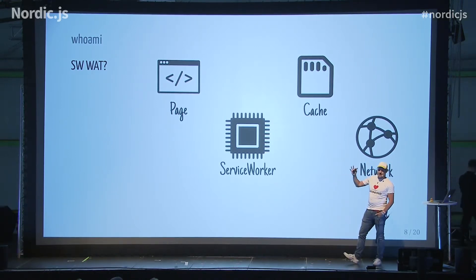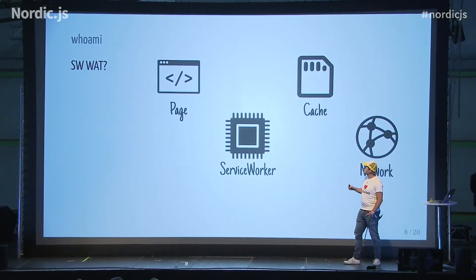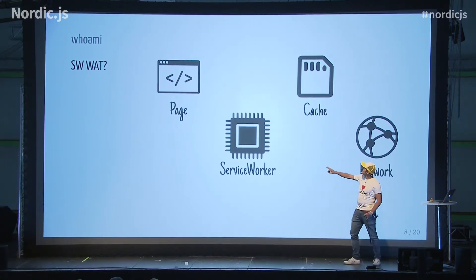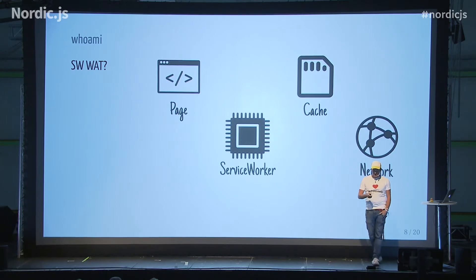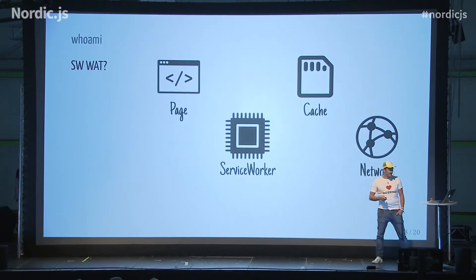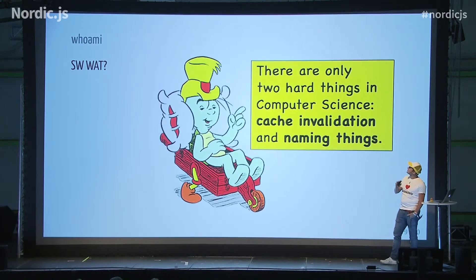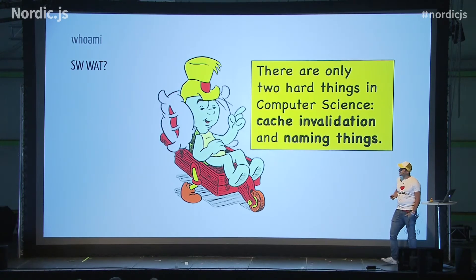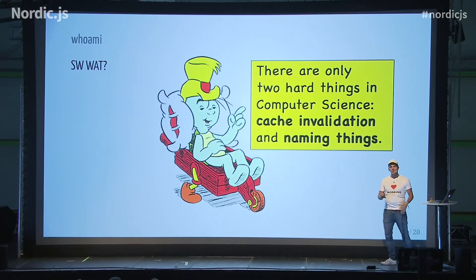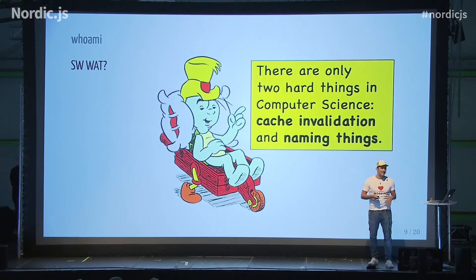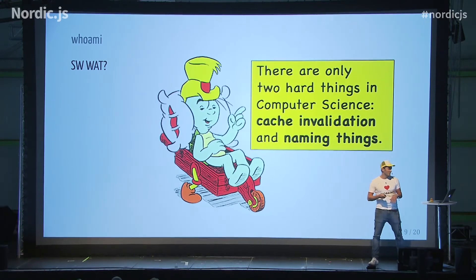The service worker can intercept events like network events, fetch requests, and other stuff. We also get this nice thing: the Cache API. As a smart person once said, there are only two hard things in computer science: cache invalidation and naming things. We already had the latter problem, and now we get to have the first problem as well — so that's perfect.